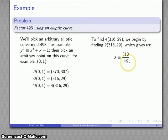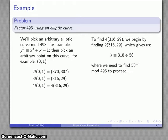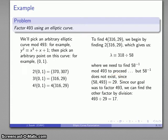At this point I need to find the multiplicative inverse of 58, and I can't. I can try to find the multiplicative inverse using the Euclidean algorithm, but when I try to do that, the algorithm fails. Since it fails to exist, that means 58 and 493 have to have a common divisor. In fact, I can find that common divisor—it works out to be 29. The process of finding that multiplicative inverse will tell us that. Since our goal was to factor 493, I can find the other factor using division: 493 divided by 29 is 17.